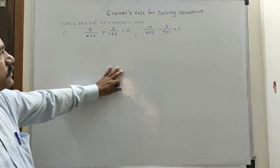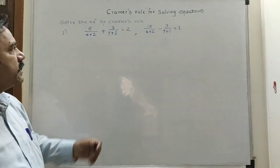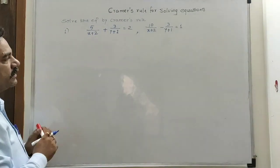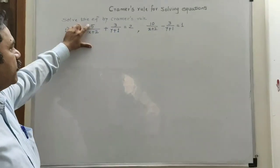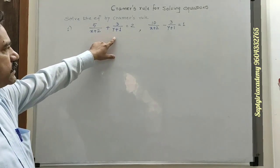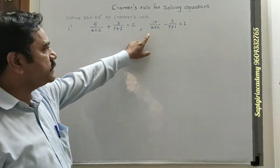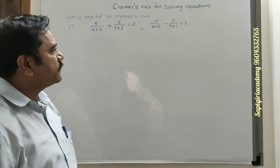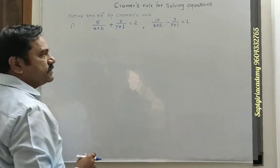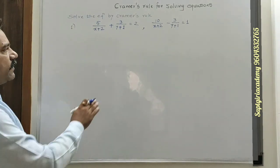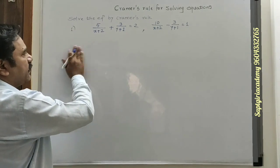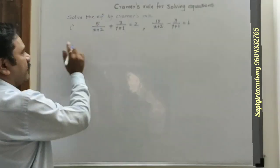Today we will solve the equation by using Cramer's Rule. The first equation is 5 upon (x+2) plus 3 upon (y+1) is equal to 2, and the second equation is 10 upon (x+2) minus 3 upon (y+1) is equal to 1. For simplification, we will consider these terms equal to some variable.